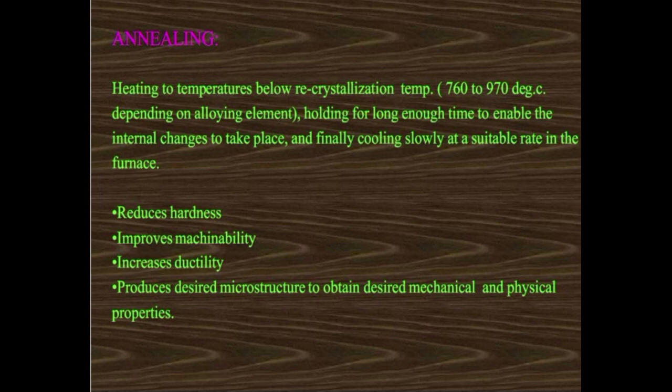Annealing: heating the material to a temperature below the recrystallization temperature range (760–970°C depending on alloy), holding for long enough time to enable internal changes to take place, and finally cooling slowly at a suitable rate in the furnace. Annealing reduces hardness, improves machinability, increases ductility, and produces a desired microstructure to obtain desired mechanical and physical properties. Annealing is also one of the stress relieving processes.